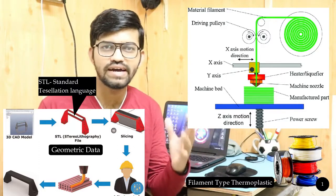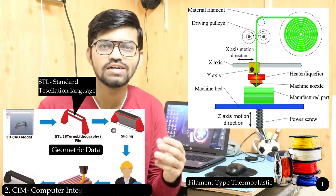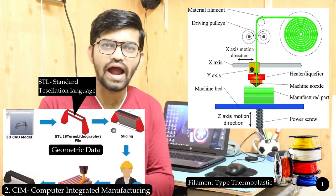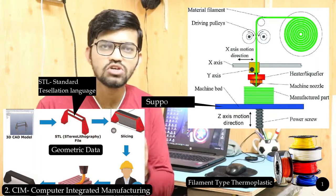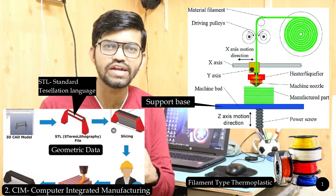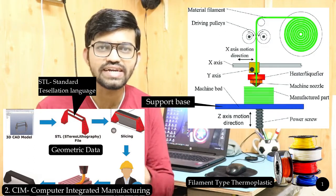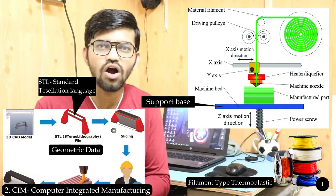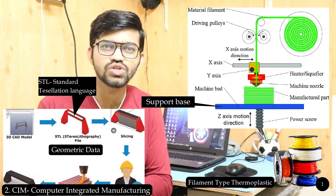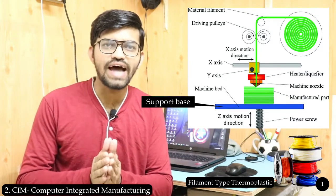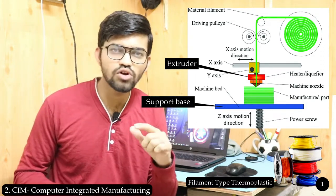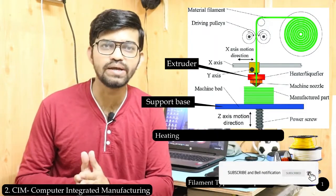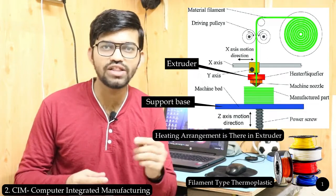The 3D printer has four important parts. First is the computer — we can call this CIM, Computerized Integrated Manufacturing. Second is the base or support plate, which can move along the X, Y, and Z axes with multiple degrees of freedom. Third is the extruder, to which the filament is connected and which contains a heating coil.